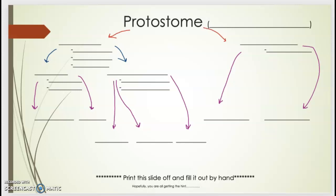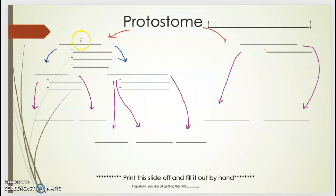We start with protostomes, and the first blank will be the key feature to help identify a protostome. Protostomes have two groups underneath, which is what the red arrows represent. We'll have a group on the left with lines representing that group's features, and a second group on the right with one key feature. Within the group on the left, there are two subgroups.